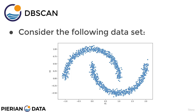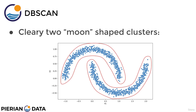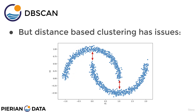For example, let's consider the moons dataset. This is called a moons dataset because we see two crescent moons — one concave and one convex. Typically if you were to try clustering on this dataset, many clustering algorithms would have issues with it. We can clearly see there are two moon-shaped clusters. However, distance-based clustering methods are going to have issues because the peaks or ends of each moon are quite close to the center of the other moon.